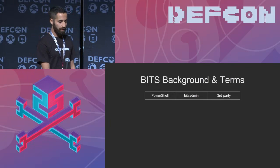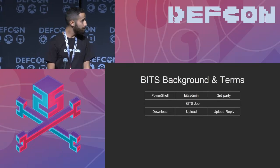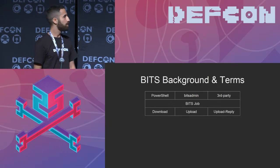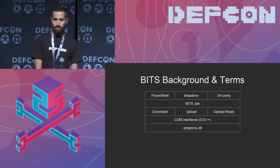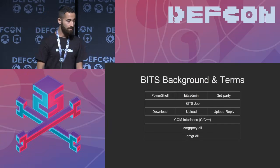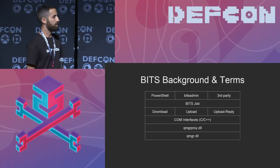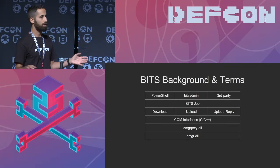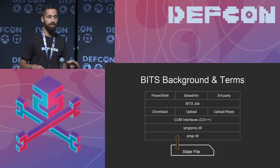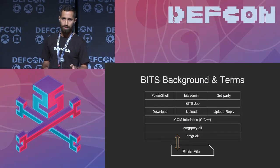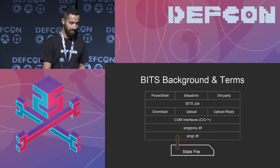BITS jobs are added from many different sources. All of them are either one type: a download, an upload, or an upload-reply. They all use the COM interface, using the QMGR proxy that proxies calls to the real implementation at QMGR.DLL. It is important to understand that BITS needs to maintain and asynchronously handle all the requests and transfer jobs. For doing that, BITS maintains a state file — a binary representation on the hard disk of the whole queue of jobs and the job objects themselves. This is where the attack happens.